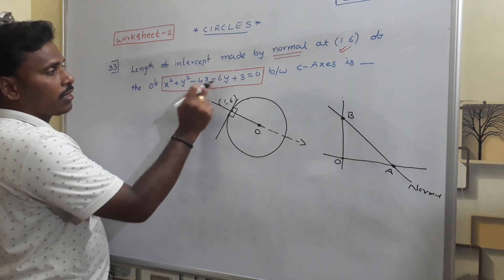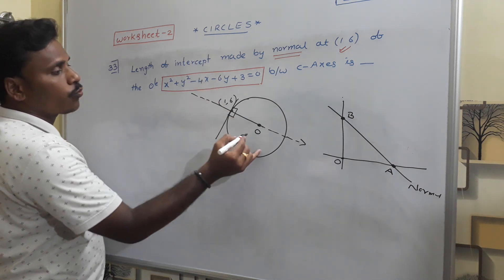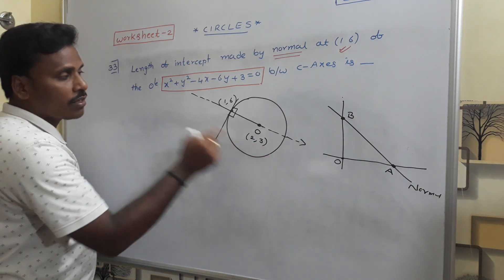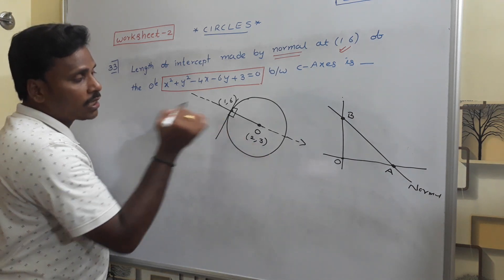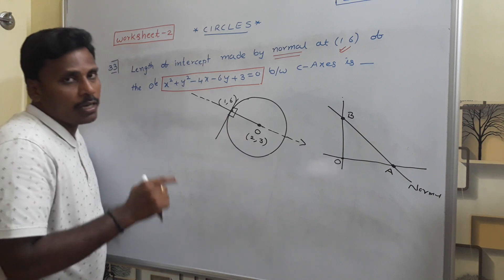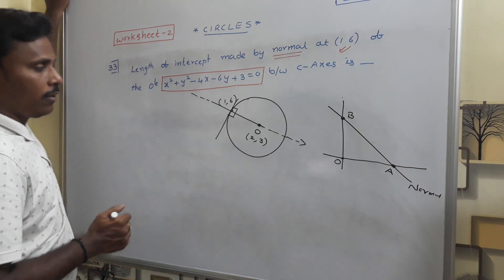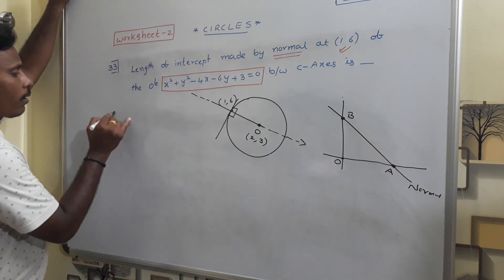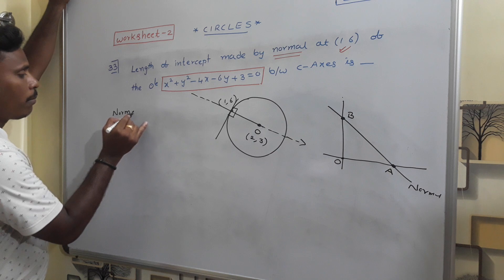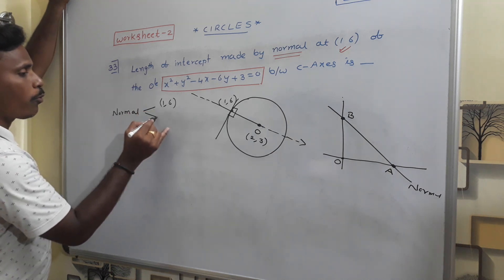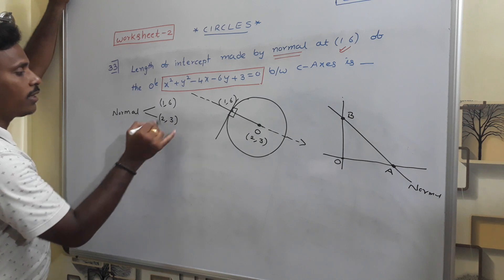First of all, what is center of the circle? This is -4x -6y. The center of the circle is simply (2,3). The point on the circle at which we are going to find the normal is (1,6). So the normal passes through 2 points: (1,6) is one point, (2,3) is the other point.